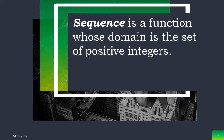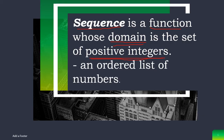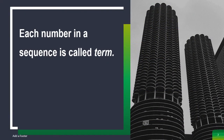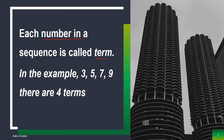What is a sequence? A sequence is a function whose domain is the set of positive integers. Always remember that the domain is only positive integers. It is also an ordered list of numbers. Each number in a sequence is what we call a term. In the example 3, 5, 7, 9, there are four terms.